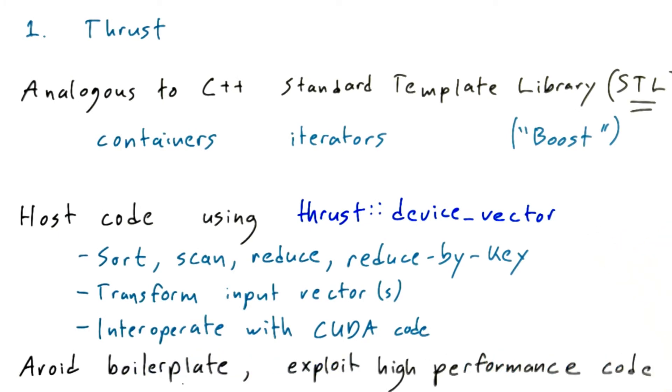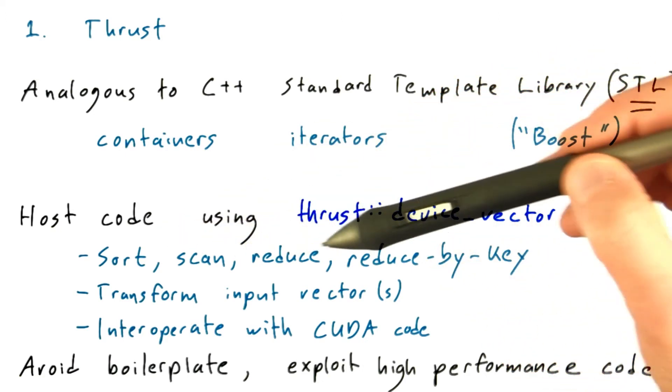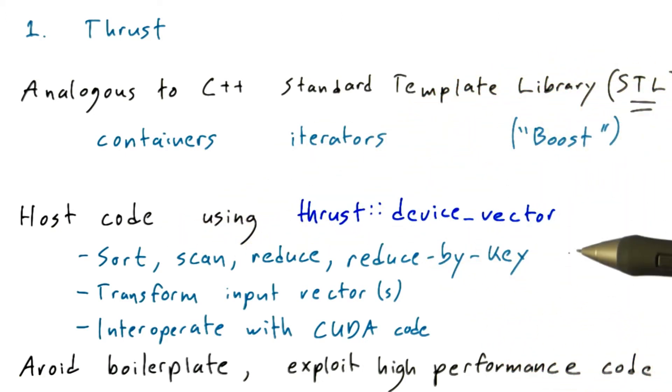In the end, using thrust is a good idea because it helps you avoid writing a lot of error-prone, cut-and-paste boilerplate code. You can exploit high-performance implementations of these data parallel primitives, like sort and scan and reduce and reduce by key. These have all been implemented by CUDA ninjas for you so that you can just reuse that code.